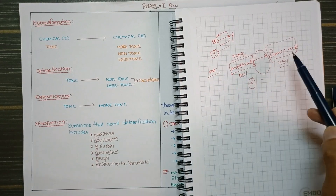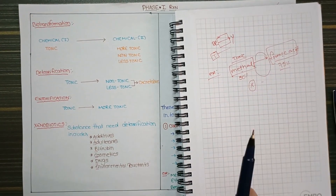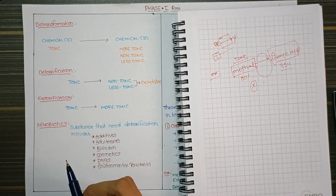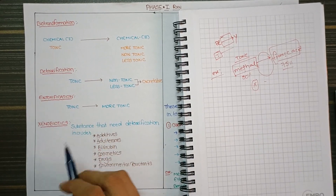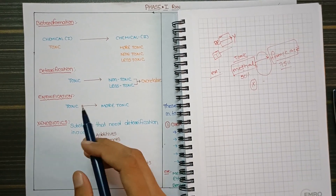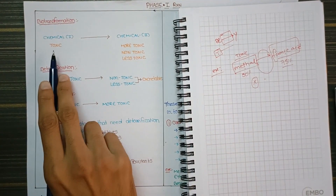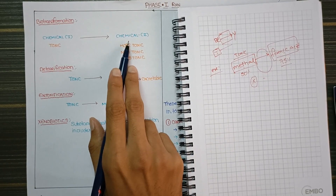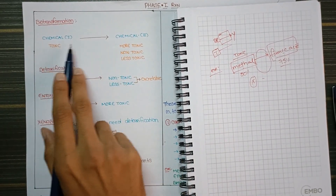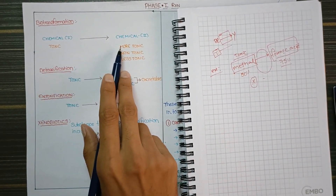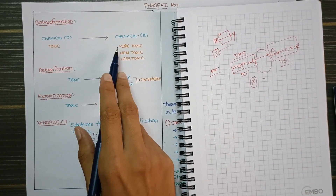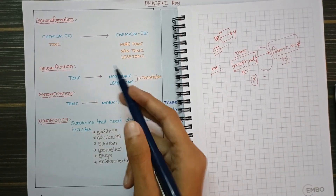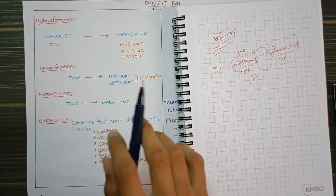Like methanol is converted into formic acid — that is intoxication. In biotransformation, one compound is converted to another. That compound may be toxic, less toxic, or non-toxic.